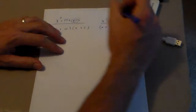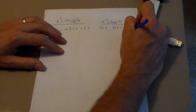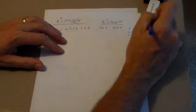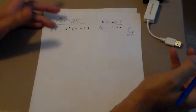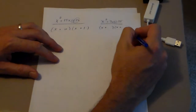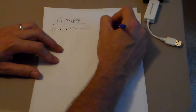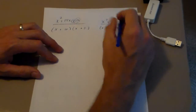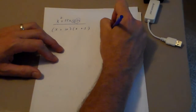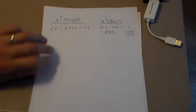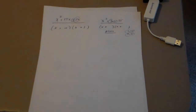The factors of 15 are 1 and 15, and 3 and 5. When I add each pair, I can't get 7, so this polynomial is prime. That's a good introduction to this case.